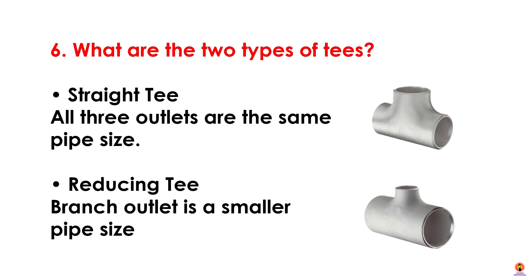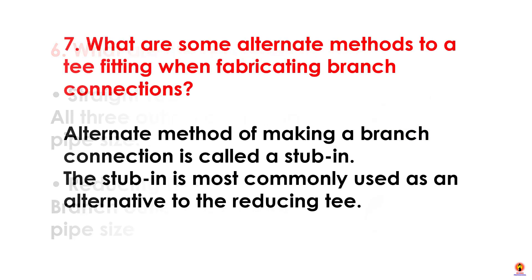What are some alternate methods to a fitting when fabricating branch connections? An alternate method of making a branch connection is called a stub-in. The stub-in is most commonly used as an alternative to the reducing T.